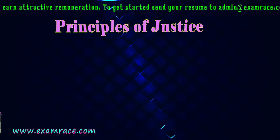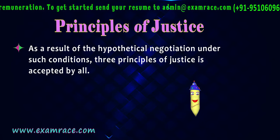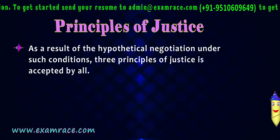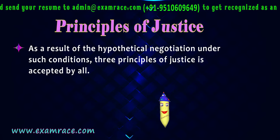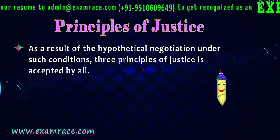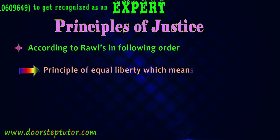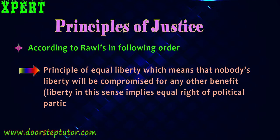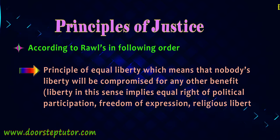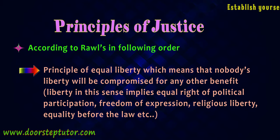Now comes the Principles of Justice. As a result of the hypothetical negotiation under such conditions, three principles of justice are accepted by all, according to Rawls, in the following order. The first is the principle of equal liberty, which means that nobody's liberty will be compromised for any other's benefit. Liberty in this sense implies equal right of political participation, freedom of expression, religious liberty, equality before the law, etc.